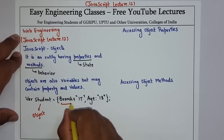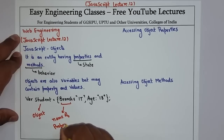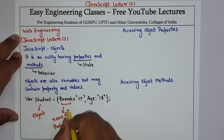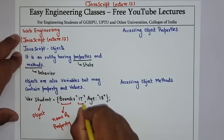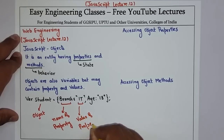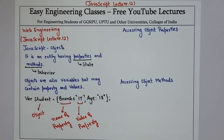Yeh hai property ka name — this is the name of the property. The student object ki property, that is 'branch' — what is its branch? That becomes the value of the property. So this is the type of object you use in JavaScript — when you want to give a variable a state or behavior.